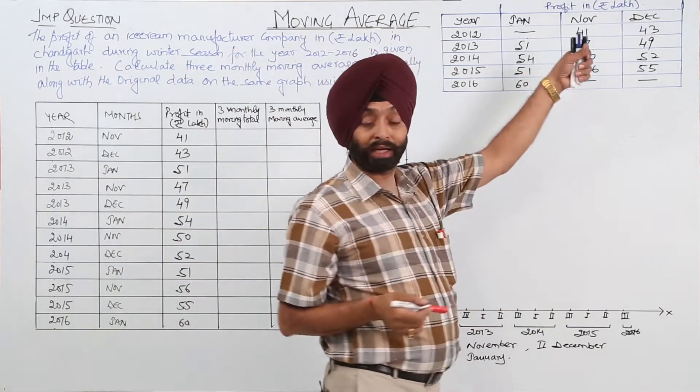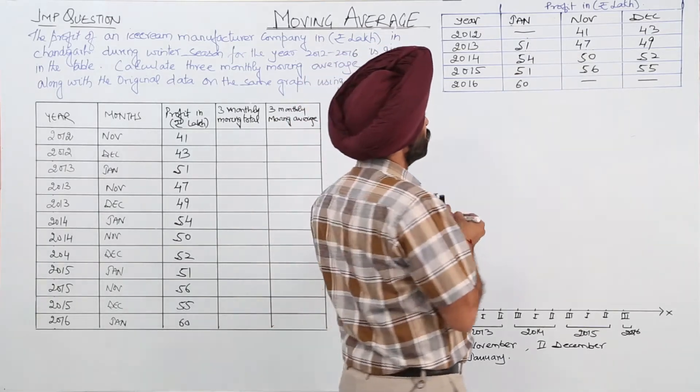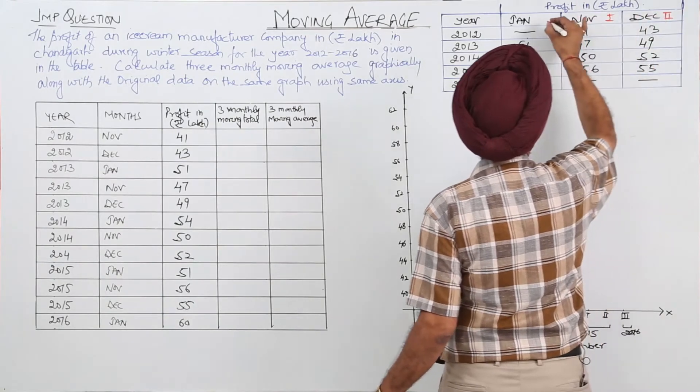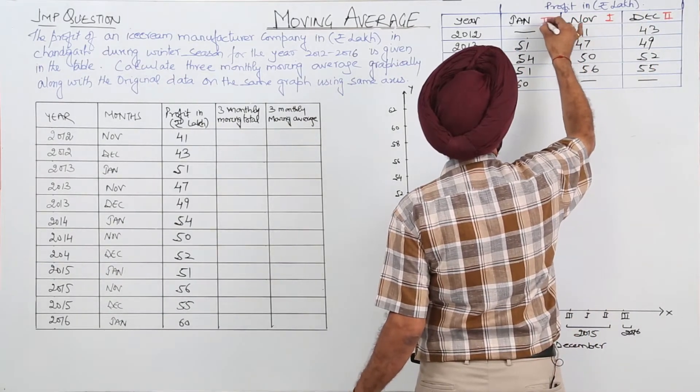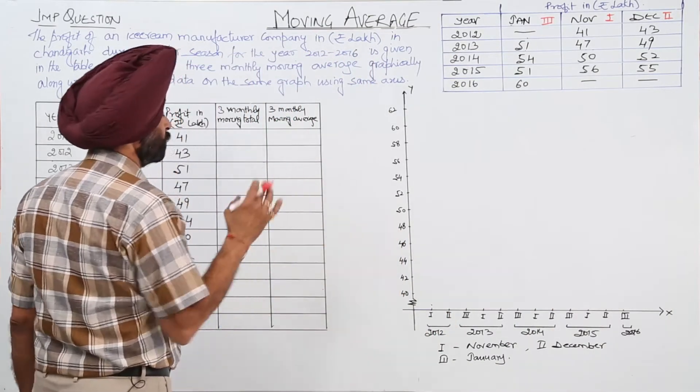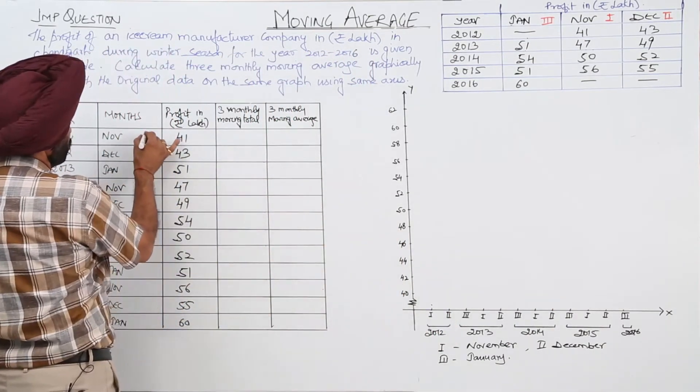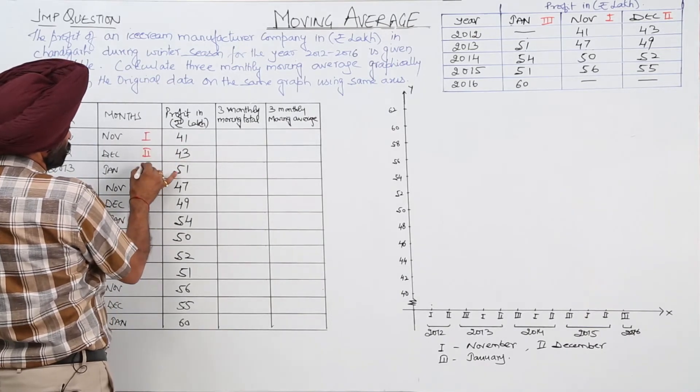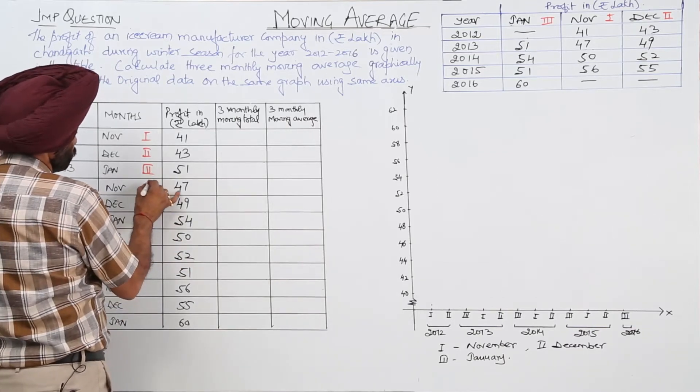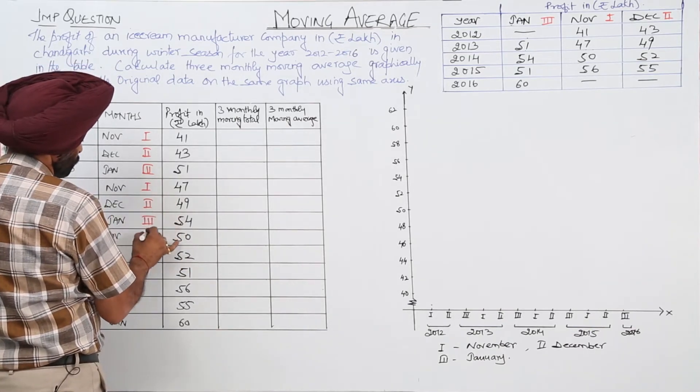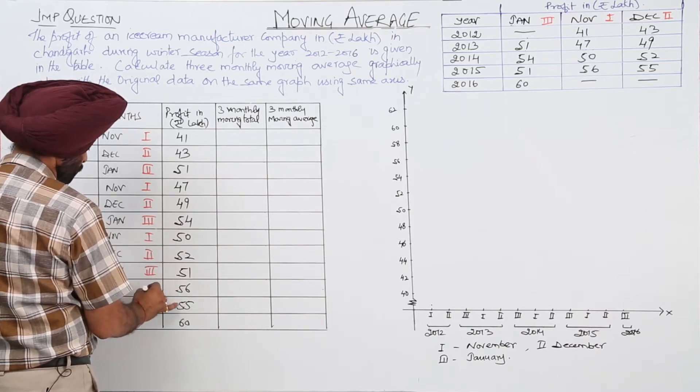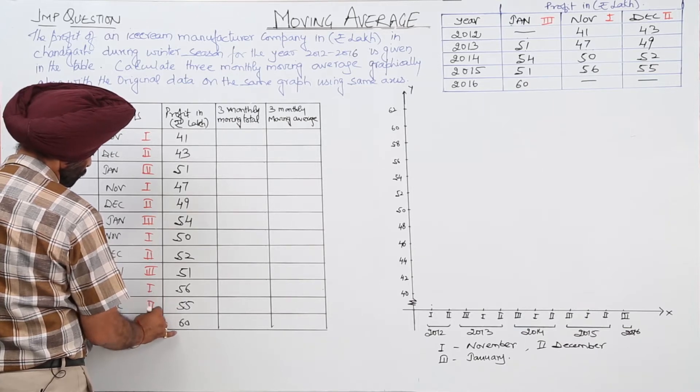Now it means the question is starting from November. So we will put this as 1, this as 2, and this as 3. Is it clear? Similarly, now we have put November as 1, so this 1, this 2, and this as 3. Now this makes a sequence. So 1st, 2nd, 3rd. 1st, 2nd, 3rd. 1st, 2nd, 3rd.